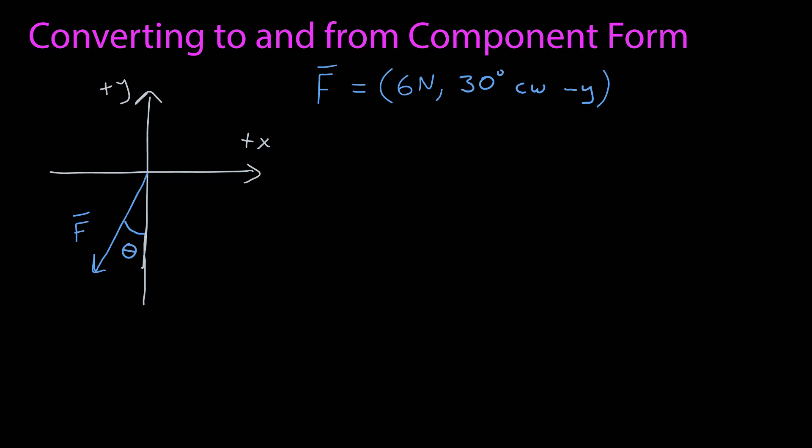In this video we're going to cover converting to and from the component form for vectors. I have a vector shown in descriptive notation. It has a magnitude of 6 newtons, and it's pointing 30 degrees clockwise from the negative y-axis. I want to find this in component form.